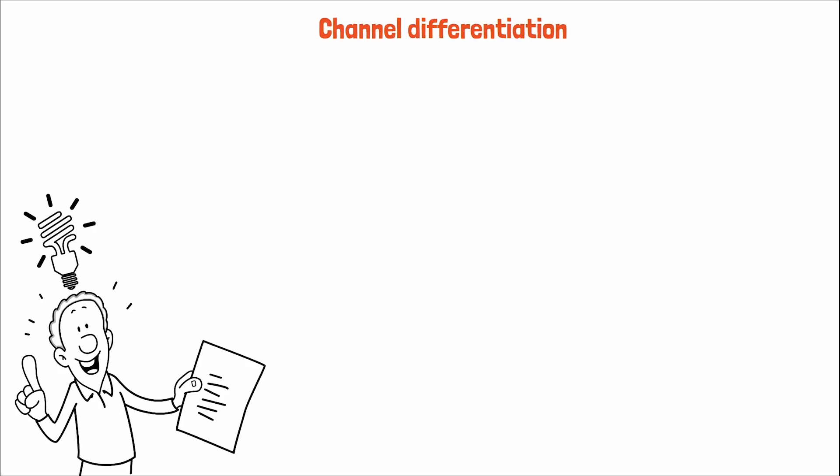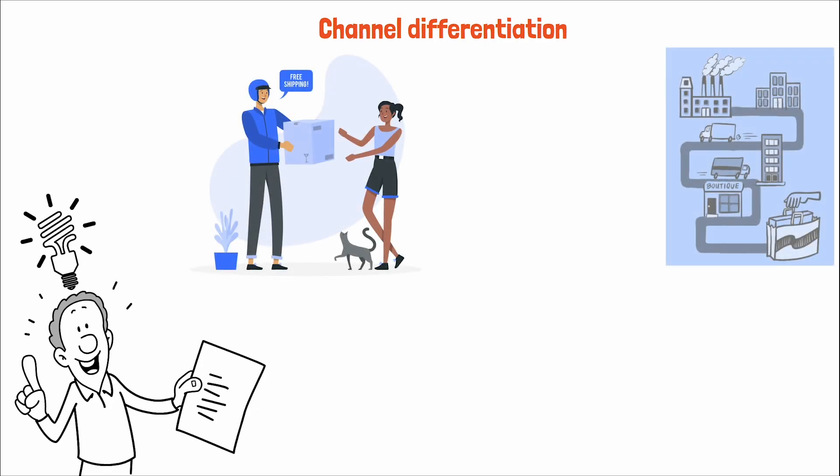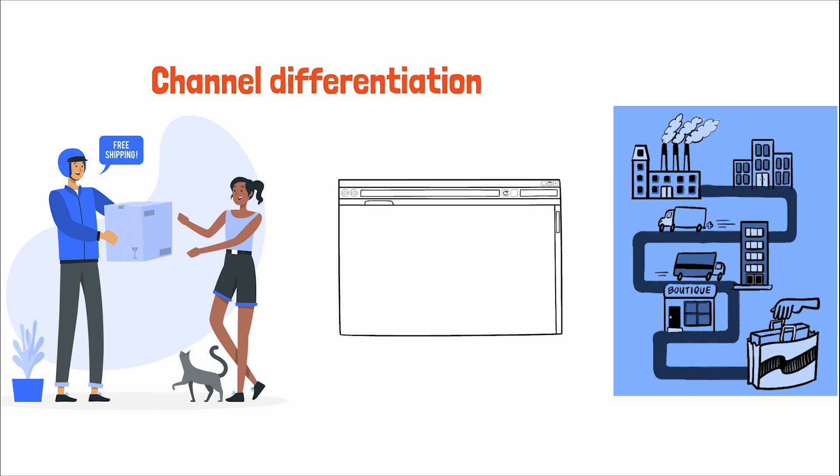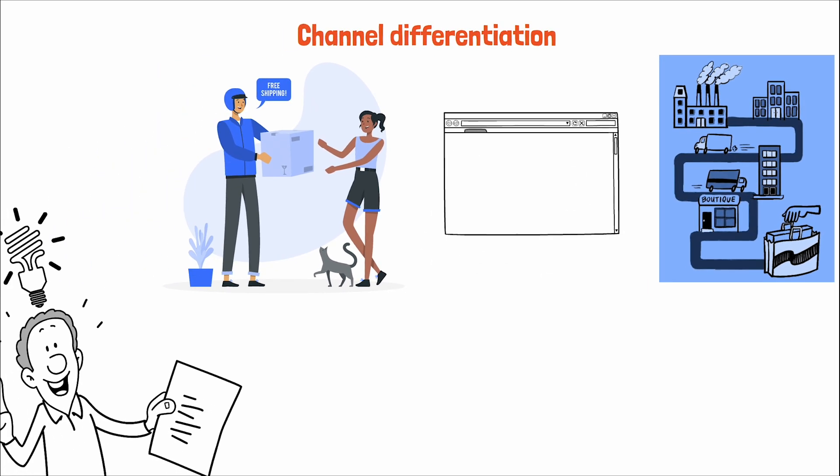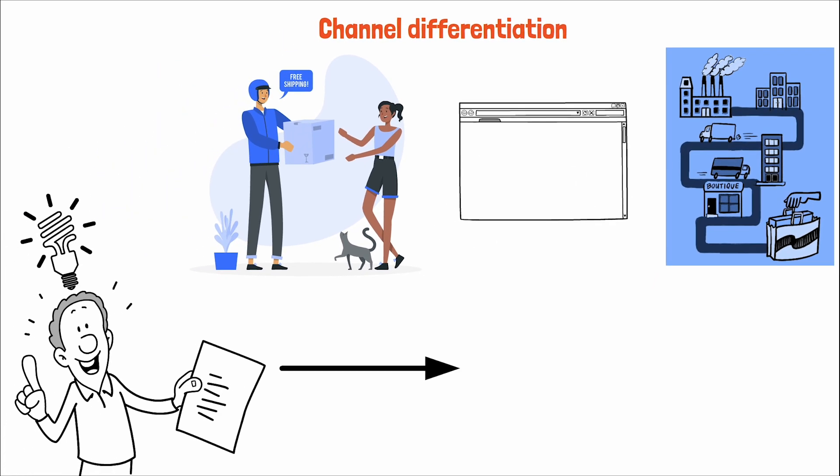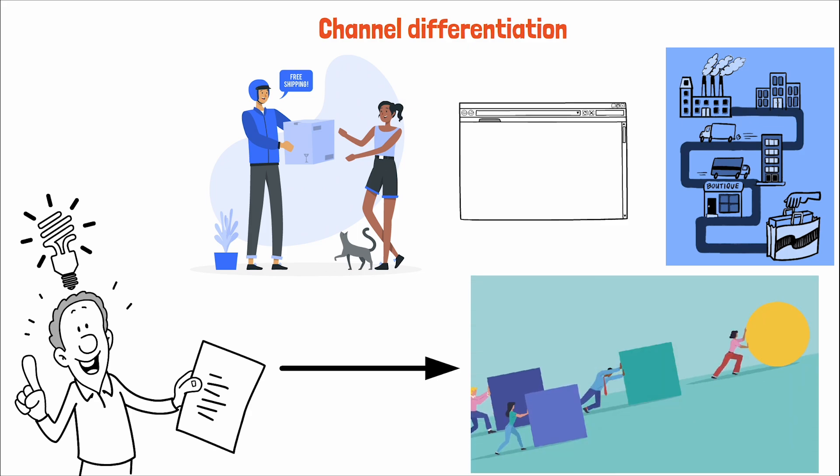In the context of channel differentiation, marketers can gain a competitive advantage by innovating the ways in which they deliver and sell products. Unique distribution channels, creative selling platforms, or exceptional customer service can distinguish a company in the marketplace, creating a distinctive brand experience that elevates it above its competitors.